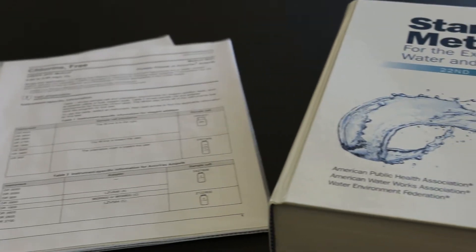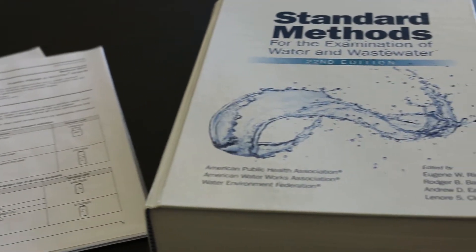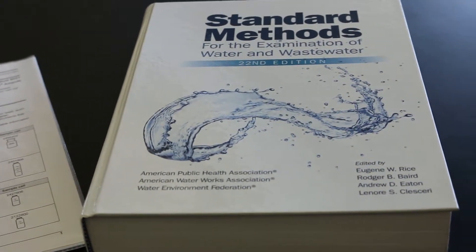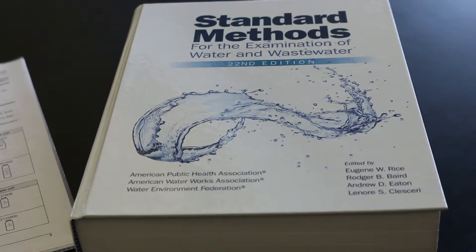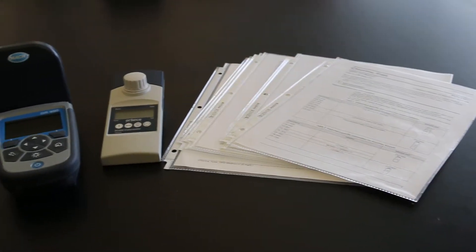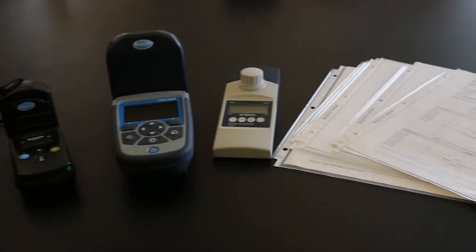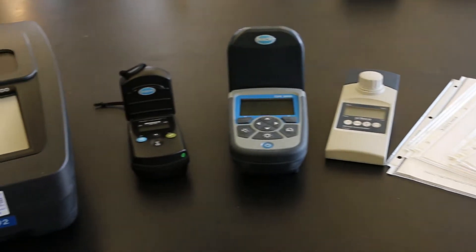The method we are following is adapted from standard methods for the examination of water and wastewater. It is used for testing total chlorine which includes both free and combined chlorine forms found in a drinking water sample.